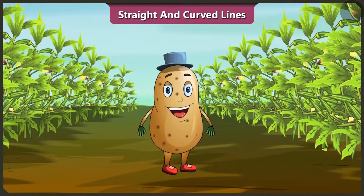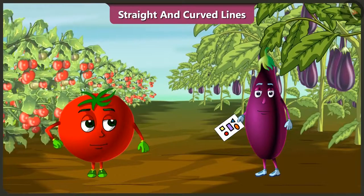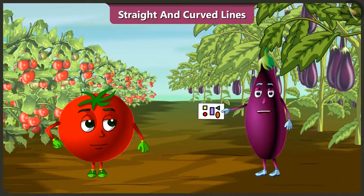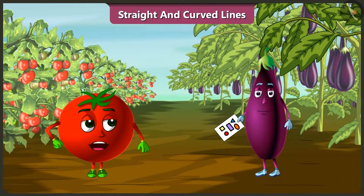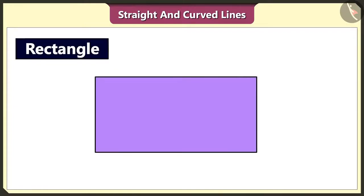Friends, in this video we will know about shapes we can form using straight lines and curved lines. Hello Bingo, how are you? I am doing good. What did you do all these days? I made different shapes using straight lines and curved lines and filled colour in them. Wow, show me. This square is made using four straight lines of same length. This rectangle is also made using straight lines, but in a rectangle the opposite lines are of the same measurement.